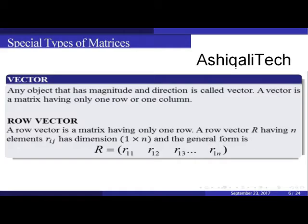A vector is any object that has a magnitude and direction. A vector is a matrix having only one row or one column. A row vector is a matrix having only one row. A row vector r having n elements r(i,j) has dimension 1×n.